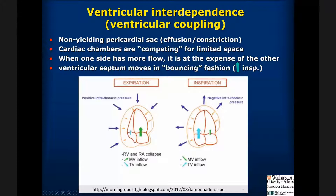The other important concept to understand is ventricular coupling or ventricular interdependence. The pericardial sac is distended, whether from fluid or from constriction, so the cardiac chambers are competing for that limited space. When one side has more flow, it decreases on the other side at the expense of the other ventricle.